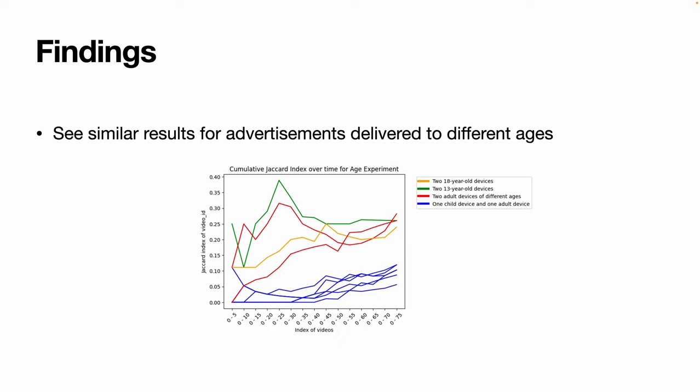We see similar results when only looking at the advertisements that are delivered. Again, the ads where one device is an adult and one is a child are very dissimilar, whereas ads delivered to devices of the same age or both adults are much more similar. This suggests that age — and specifically whether or not a user declares themselves to be over or under 18 — plays a strong role in the delivery of content on TikTok.